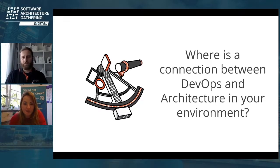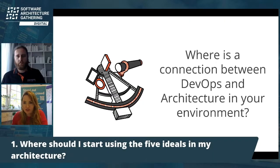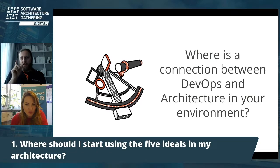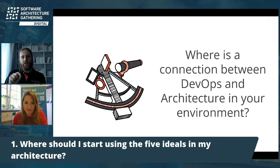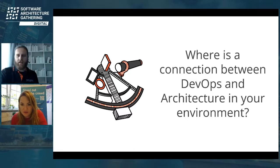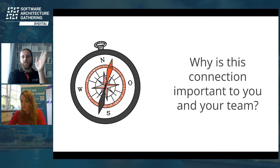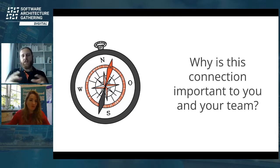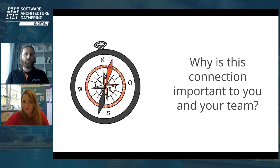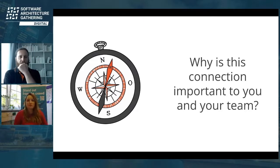While we wait for people to think about this connection, we have a couple of questions. The first: where should we start using the five ideals in my architecture? I would like to ask two more questions first and then come back to that one. The second question, connected to the first: why is this connection you've just thought about important to you and your team? Take 20-30 seconds to think about that and write it down.